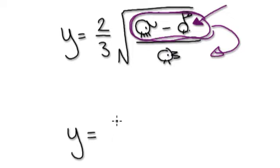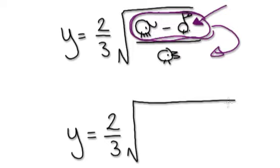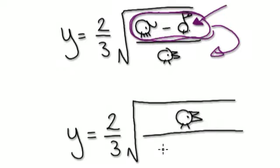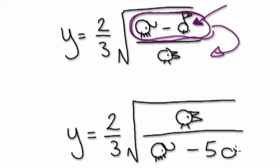See if you can do this one here: y equals two over three, root chicken. I'm turning this fraction upside down — hopefully that will confuse you — so elephant here, take away, let's put a five in there, hopefully that will confuse you.